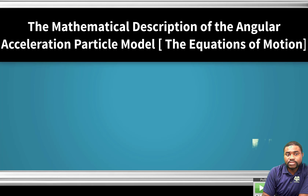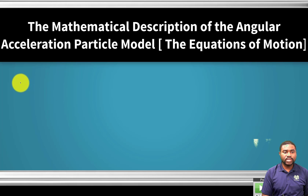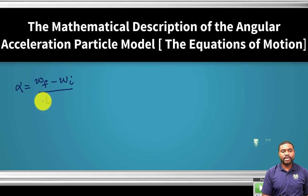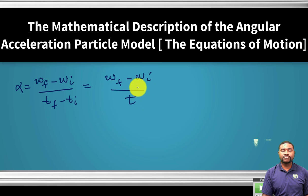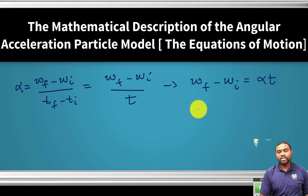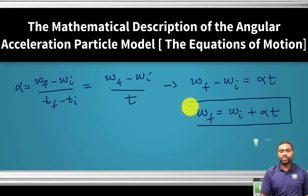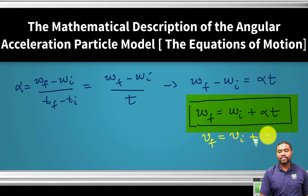Let's look at the equations of motion — specifically for constant angular acceleration. We know that α = (ωf − ωi) / t, which gives ωf − ωi = αt, and therefore the first equation of motion is: ωf = ωi + αt. This is analogous to the linear equation vf = vi + at.